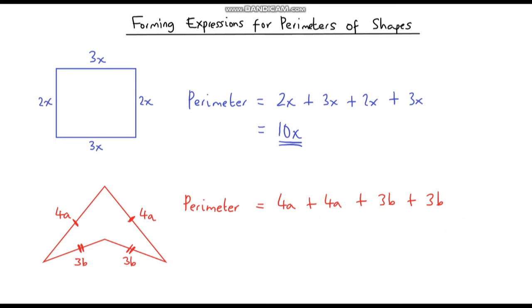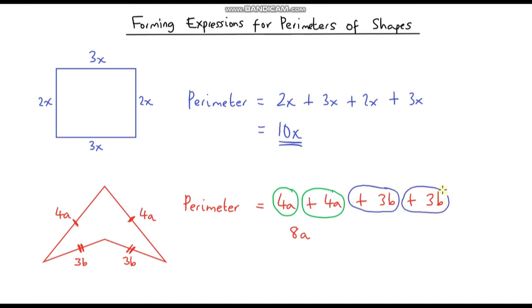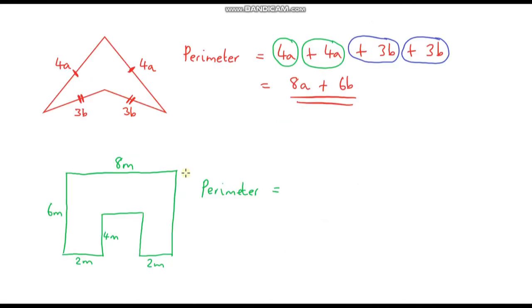We have like terms, so we can group them. 4a plus 4a gives 8a, and 3b plus 3b gives 6b, so the perimeter is 8a plus 6b. Can we simplify further — is this 14ab? No, we cannot simplify any further because these two terms are not like terms. So 8a plus 6b is our final answer.